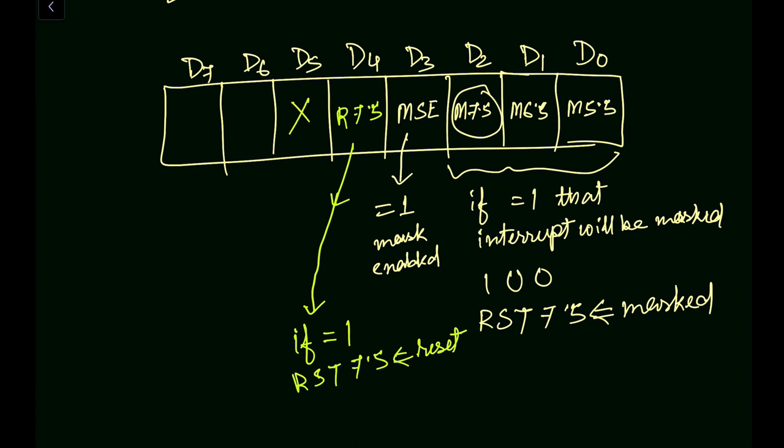Next, we have this D5 bit. This is don't care. Next, we have D6. This D6 is represented with SDE. What is the meaning of SDE? That is the Serial Data Enable. SDE represents Serial Data Enable.